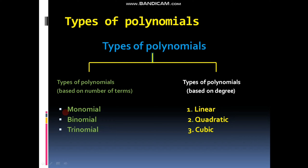If there is only one term in a polynomial it is called a monomial. If there are two terms in a polynomial they are said to be binomial. And if there are three terms in a given polynomial it is called a trinomial. Some of the types of a polynomial based on degree are linear polynomial, quadratic polynomial and cubic polynomial.